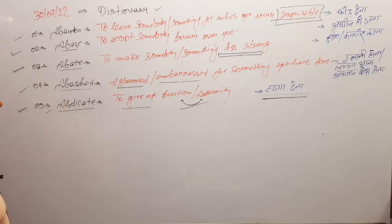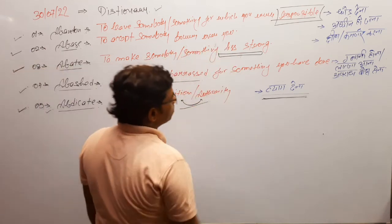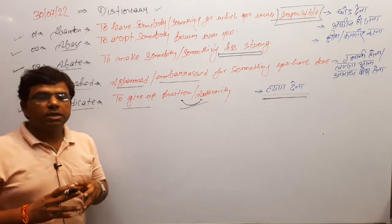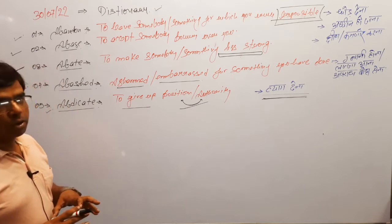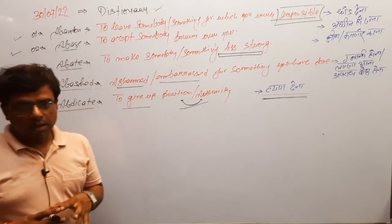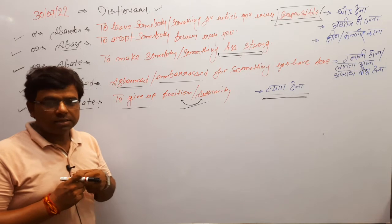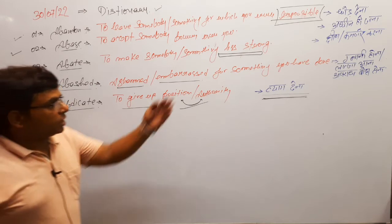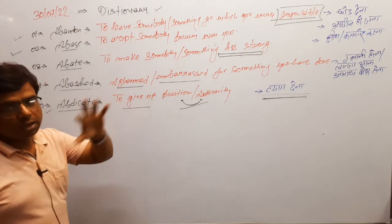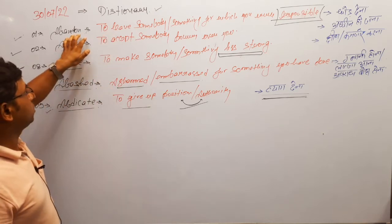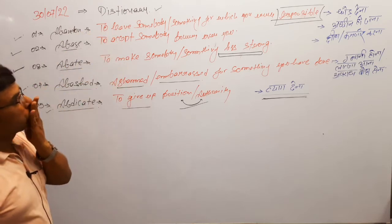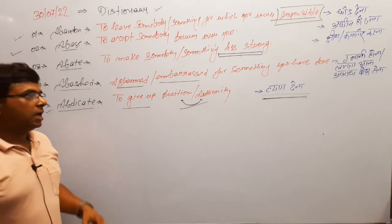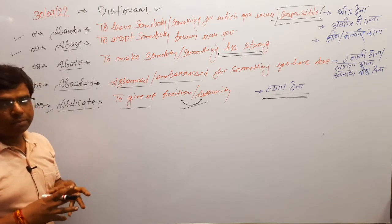The first word is 'abandon.' Its meaning is: to leave somebody or something for which you are responsible — that means the responsibility has not been completed yet. For example, an employer has given a particular task to his employee, and the moment the employee accepts that task, the responsibility and accountability begin. But before the completion of that work, he or she leaves in the middle. That situation or word is known as 'abandon.' Hindi: chhoddena — the person holding accountability has left before fulfilling the responsibility.